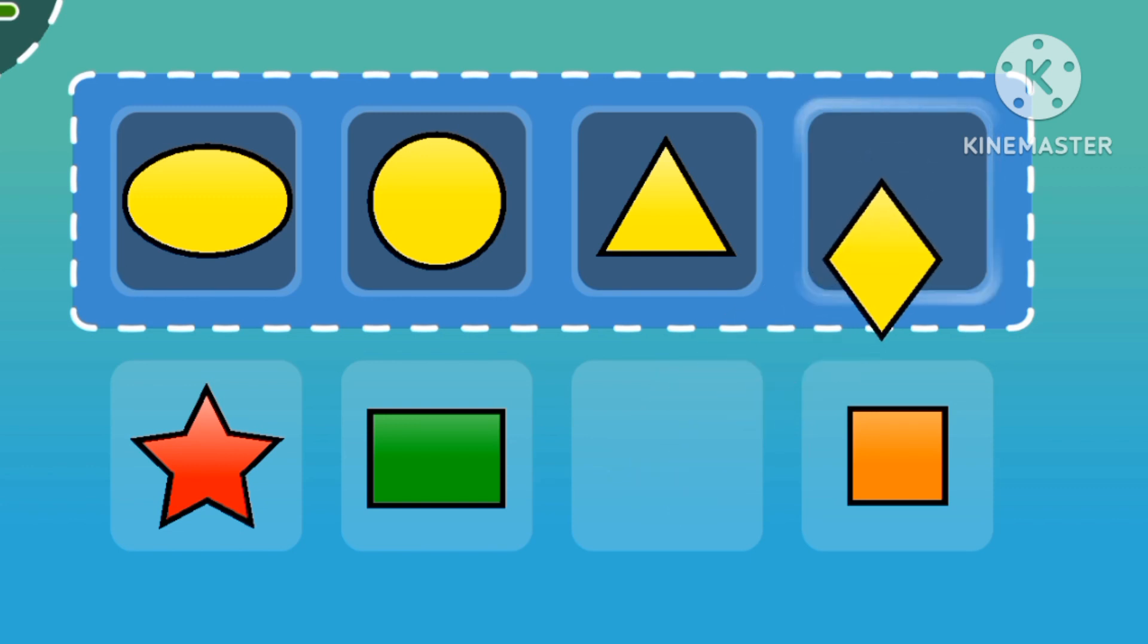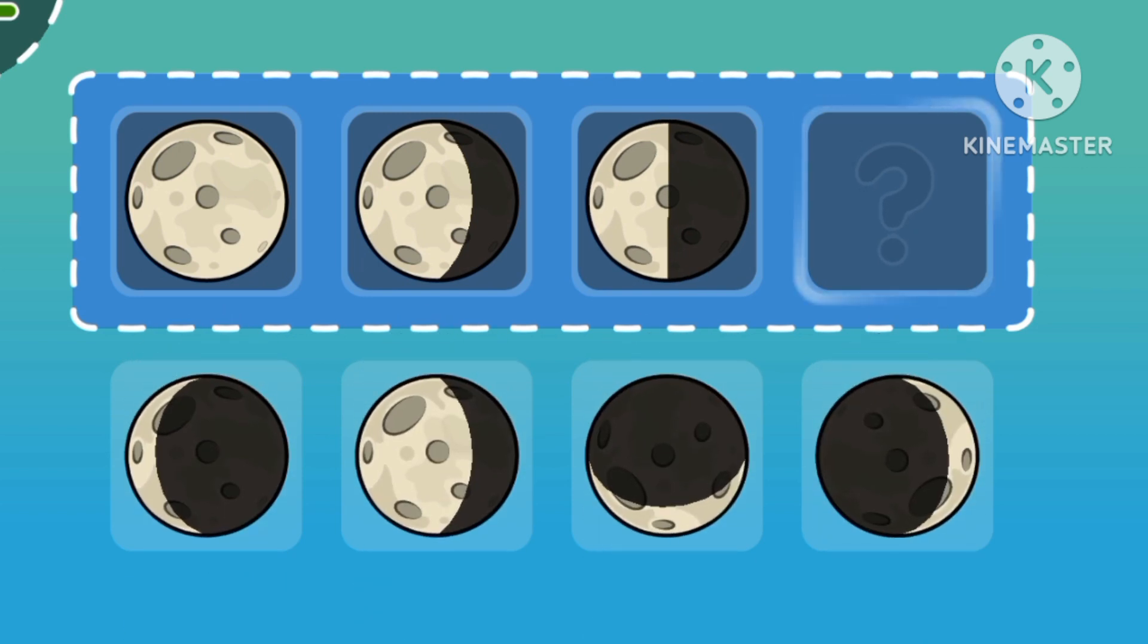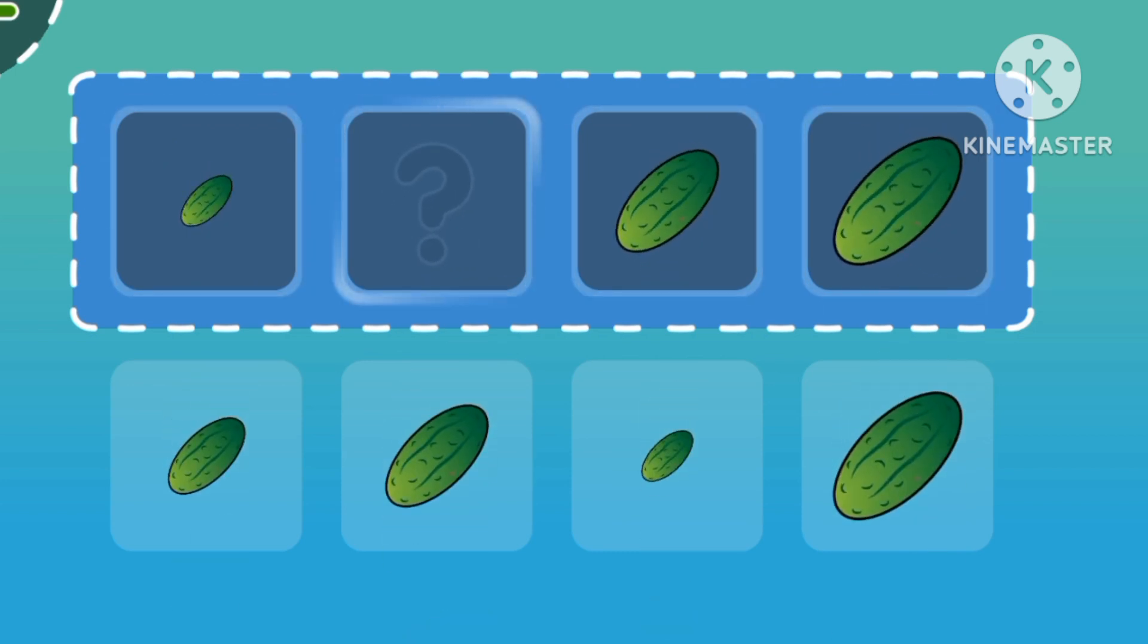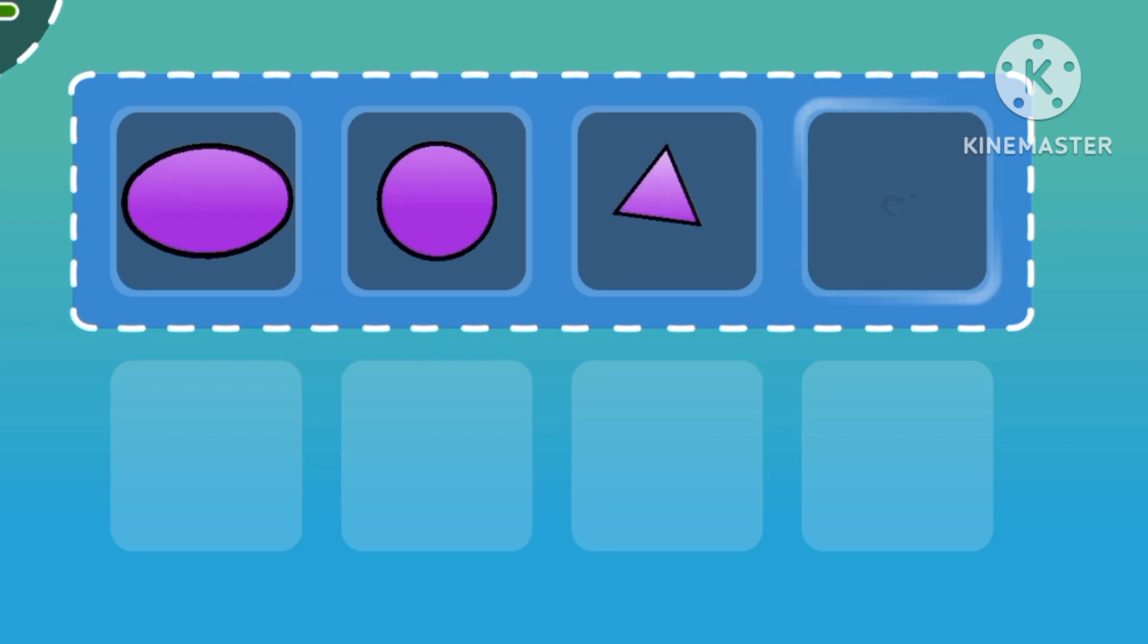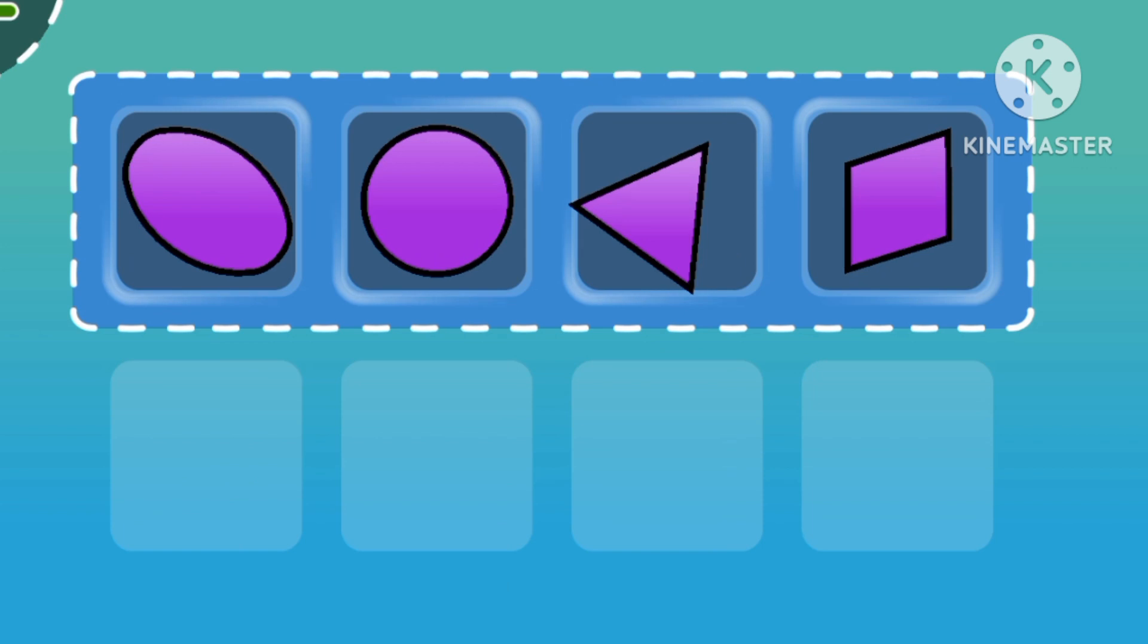The same color? Crescent. What's this moon shape? Crescent. Great! Eight. What's after medium? Crescent. What's after eight? Crescent. The same color? Crescent. Great job.